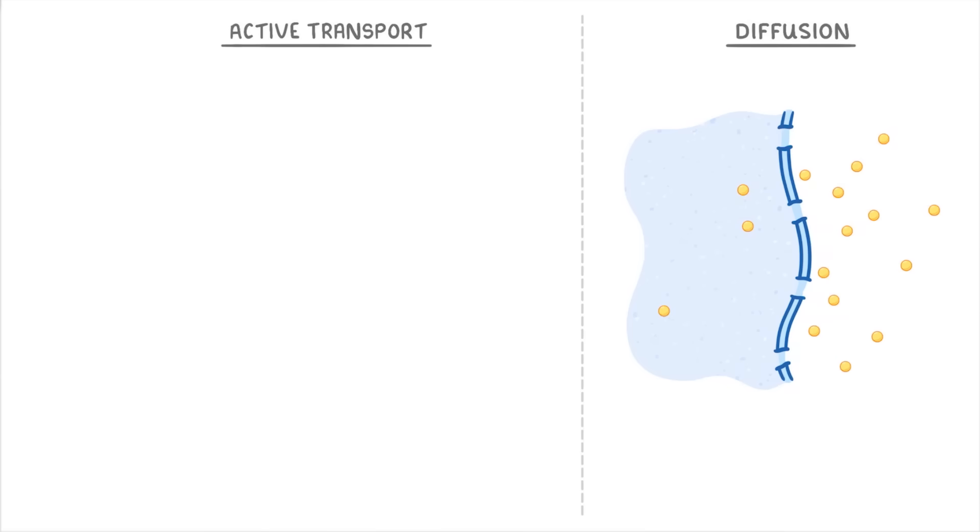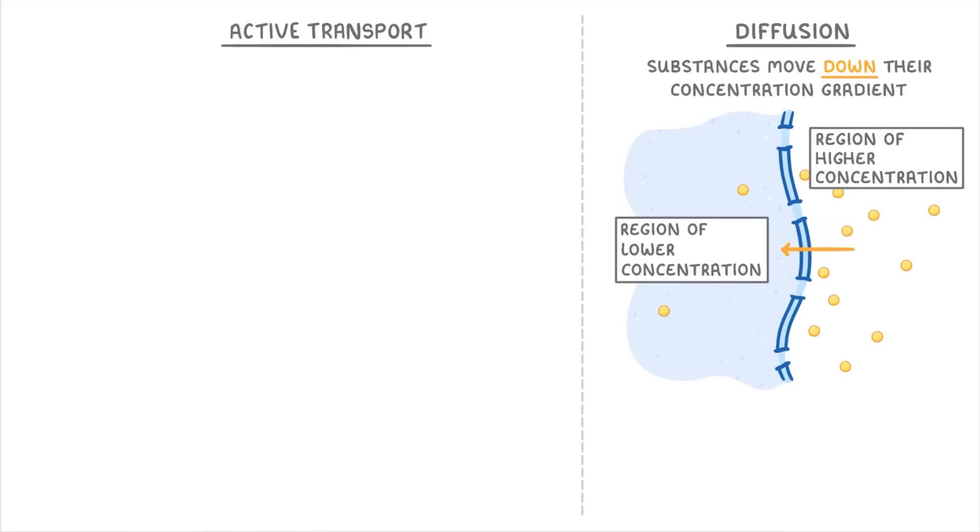If you remember, diffusion is the process by which substances move down their concentration gradients from a region of higher concentration to a region of lower concentration. And the important thing to remember about diffusion is that it's a completely passive process, which means that it doesn't require any energy from the cell. It's kind of like water flowing downhill, it will just happen by itself.